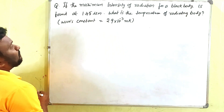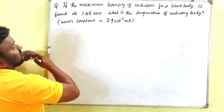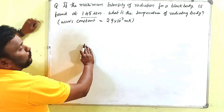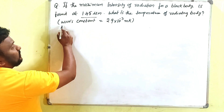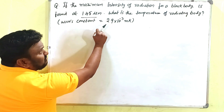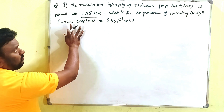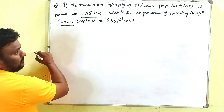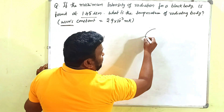The maximum intensity of radiation of a black body is at 1.45 micrometers. What is the temperature of the radiating body? Wien's constant is given as 2.9 × 10⁻³ meter Kelvin. This is a clear-cut problem based on the formula of Wien's displacement law.